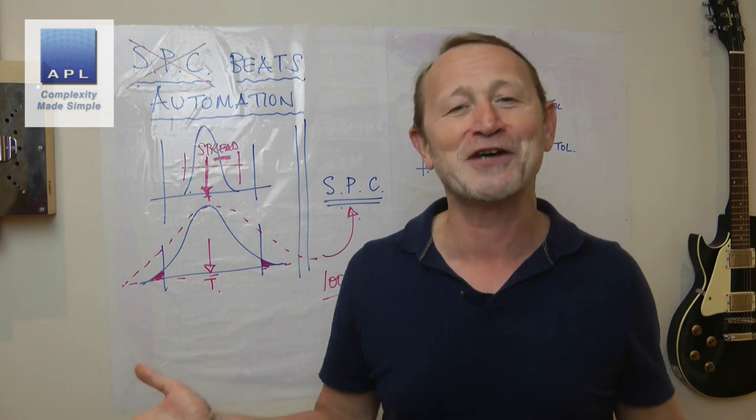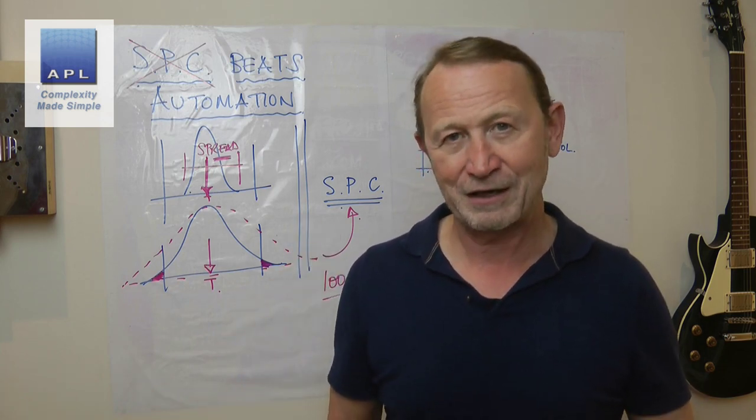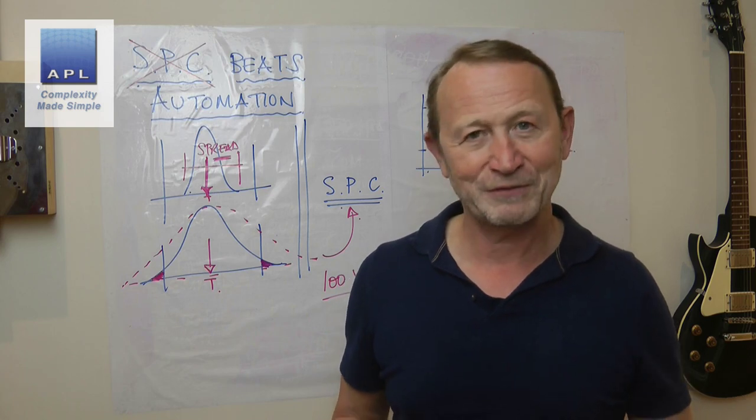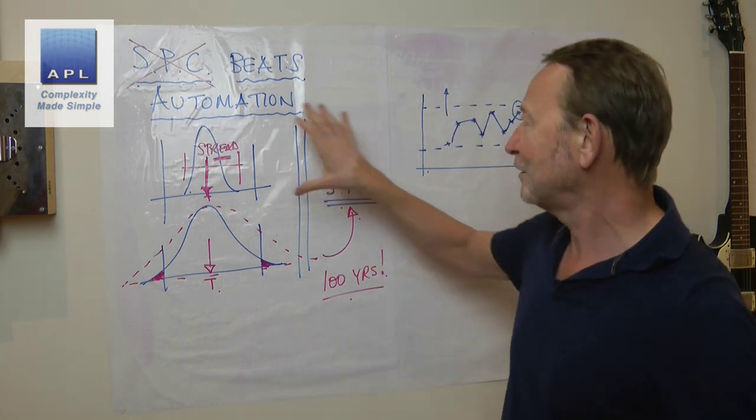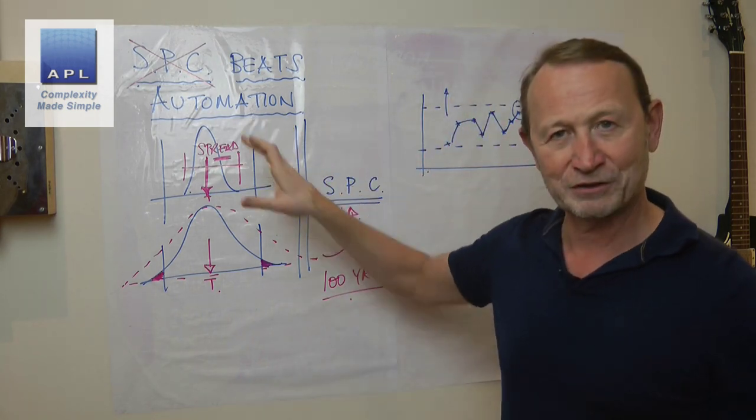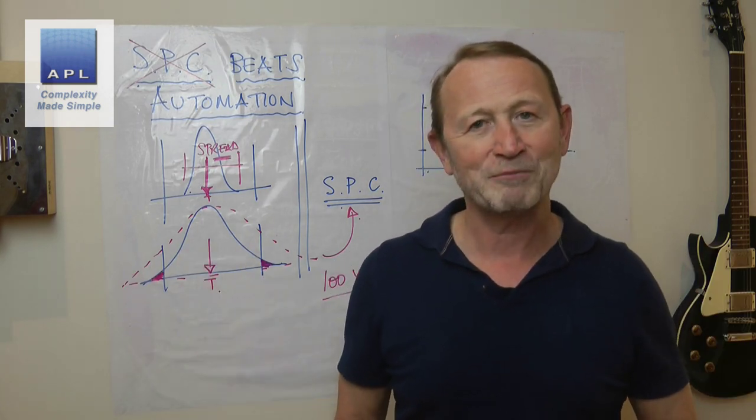But still, you are automating the fastest way to lose money. You really are. So that's my issue with automation, AI, you know, artificial intelligence. They completely forget the power of design of experiments.